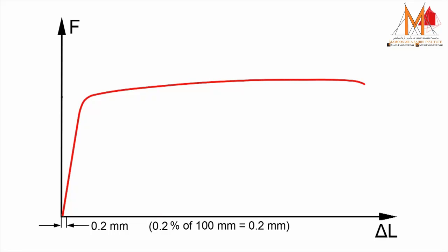In the force elongation diagram, a straight line parallel to the elastic line is drawn through the offset point of 0.2 mm of elongation. The force at the intersection point of the offset line with the force elongation diagram is designated as FP0.2. This is the force that causes a plastic strain of 0.2%. The 0.2% proof strength RP0.2 is equal to FP0.2 divided by the original cross-sectional area S0.